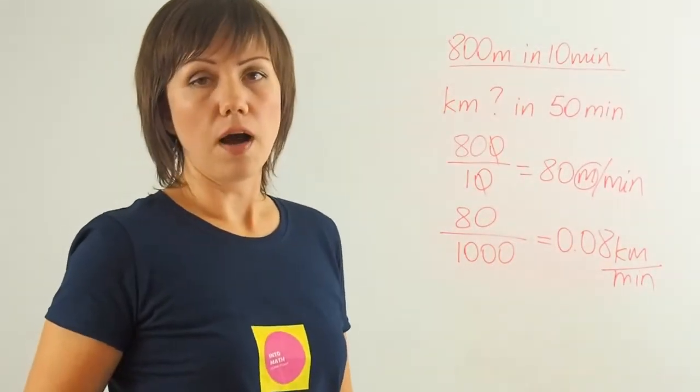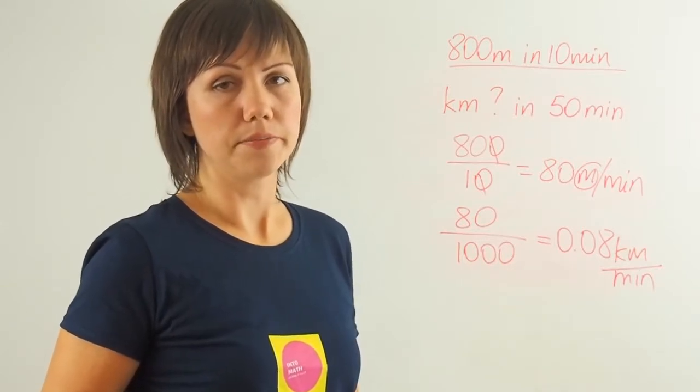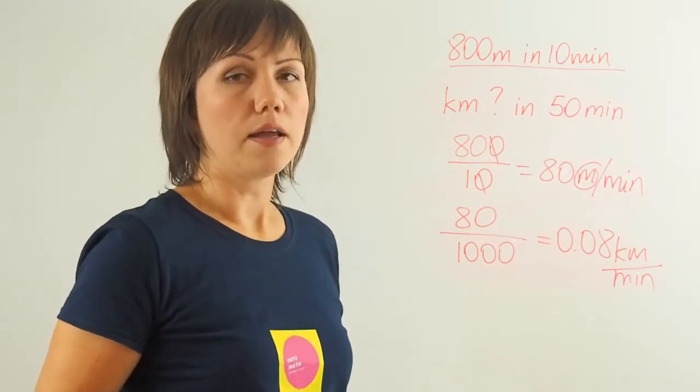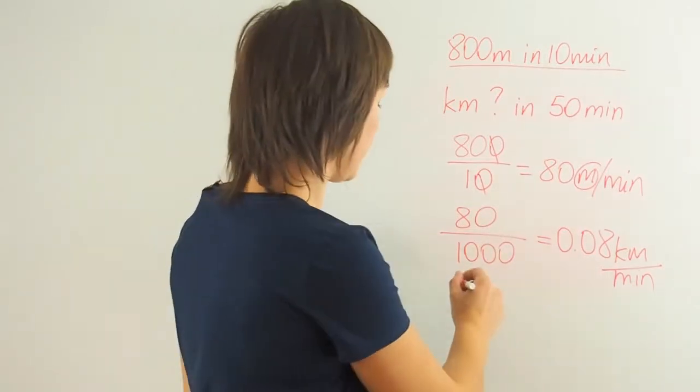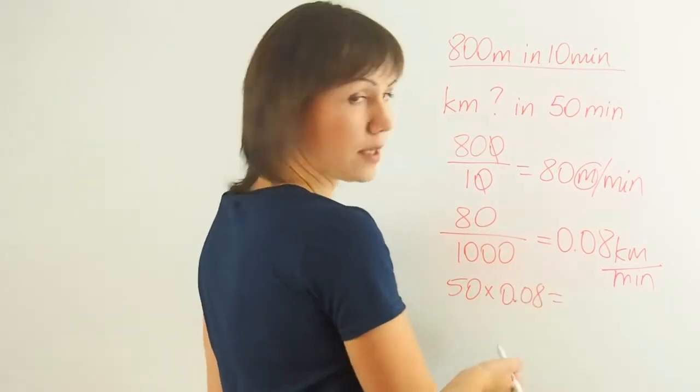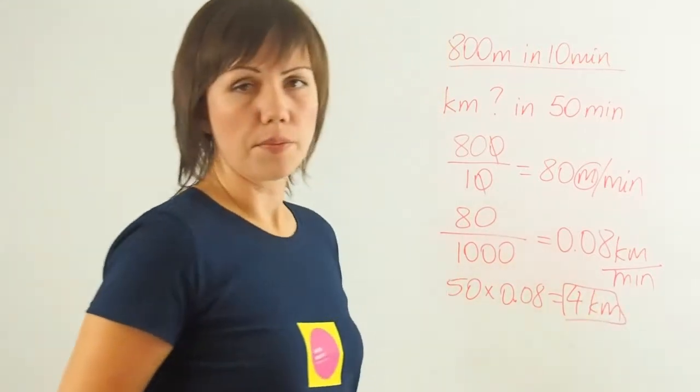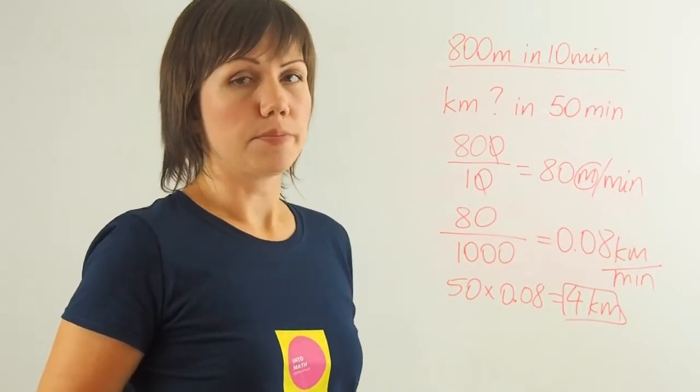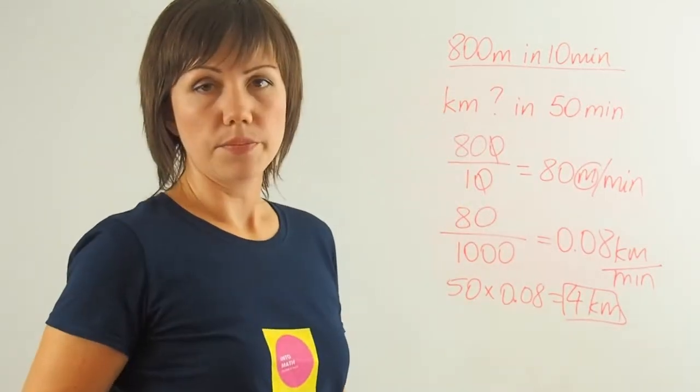So now I know how many kilometers she runs per one minute. Then how many will she run in 50 minutes? I need to now multiply 50 by 0.08. 50 times 0.08 will give me 4 kilometers. 4 kilometers is the distance that she'll be able to cover in 50 minutes if she runs at 800 meters per 10 minutes.